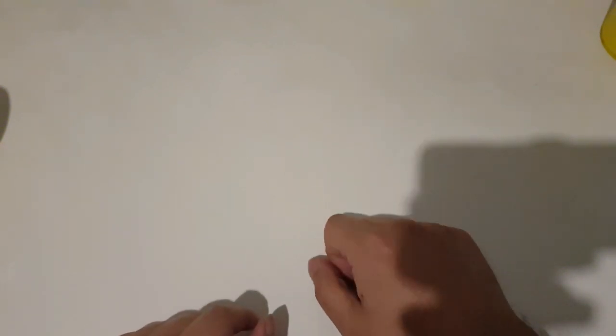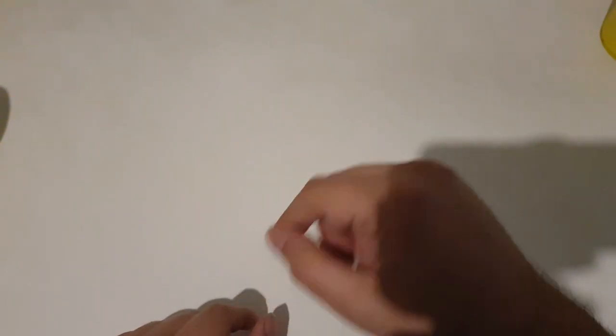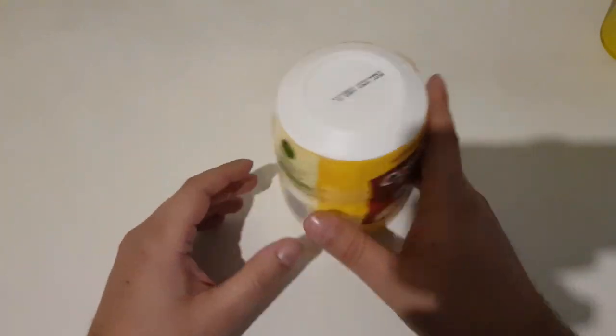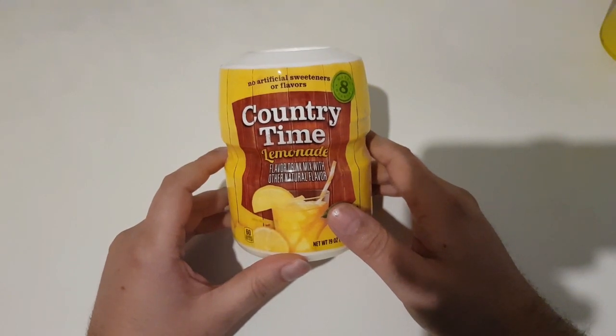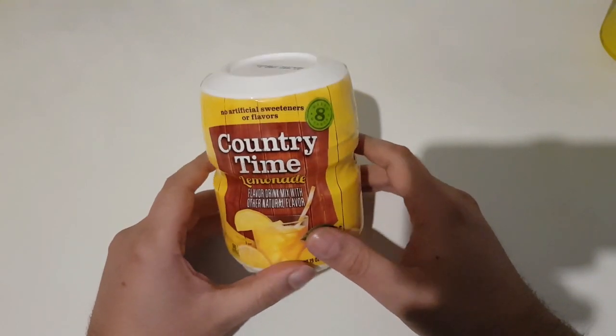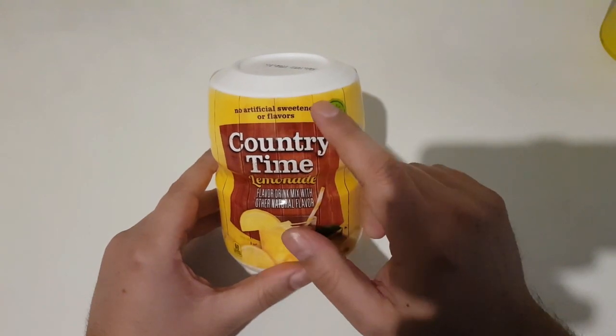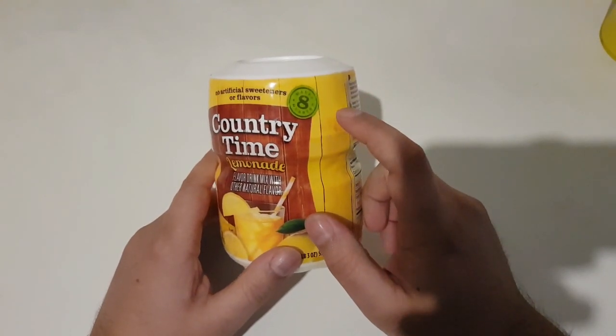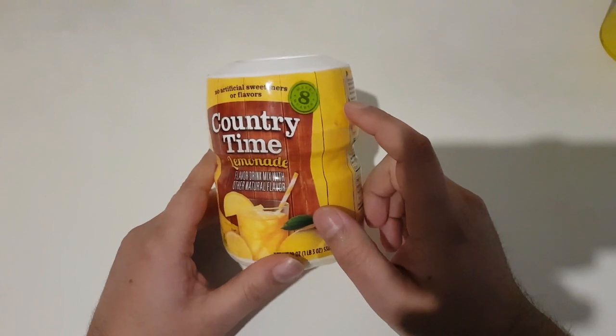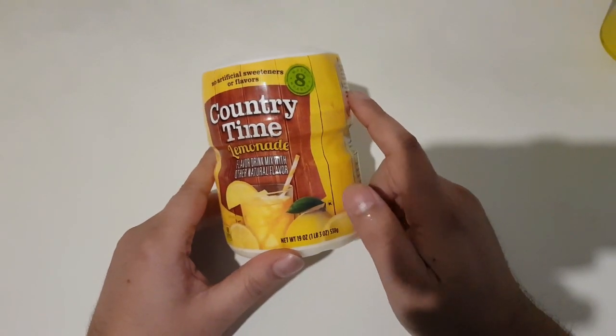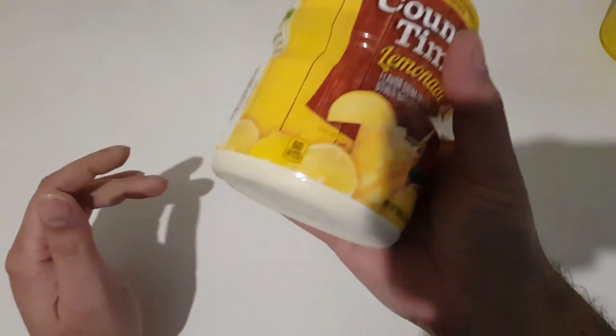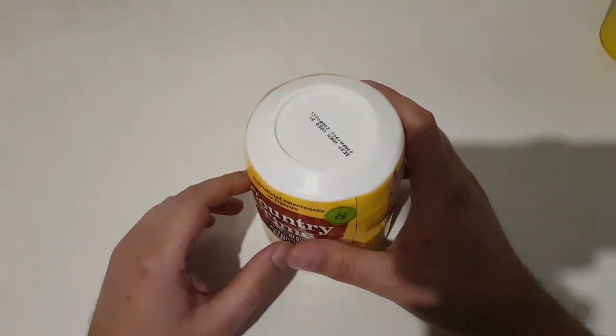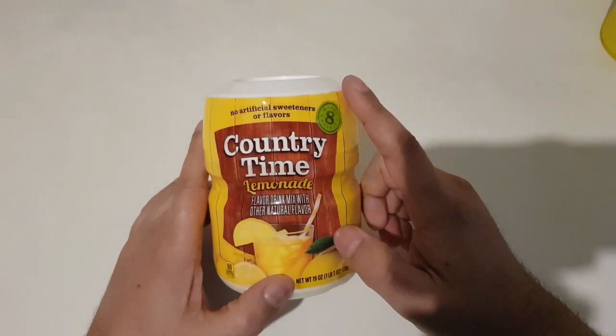But I found the next best thing. It's called Country Time lemonade flavor drink mix with other natural flavor. No artificial sweeteners or flavors. It makes eight quarts. It's over half a kilo for this one, and get ready for a surprise.